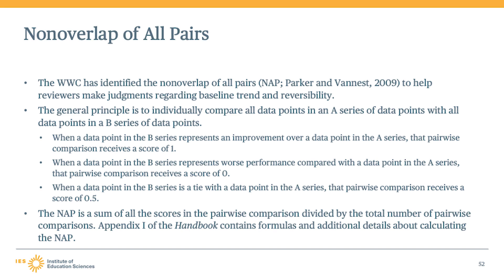The WWC has selected the non-overlap of all pairs as the non-overlap effect size to use for making judgments regarding baseline trend and reversibility. The general principle involves comparing all of the data points in one series, sometimes called the A series, with all the data points in the B series in a pairwise fashion. When a data point in the B series represents an improvement over the A series, that pairwise comparison receives a score of 1. When it represents worse performance, that comparison receives a score of 0. Ties receive a score of 0.5. The non-overlap of all pairs is then calculated as the sum of all pairwise comparisons divided by the total number of pairwise comparisons. Appendix I of the handbook contains formulas and additional information regarding this calculation.